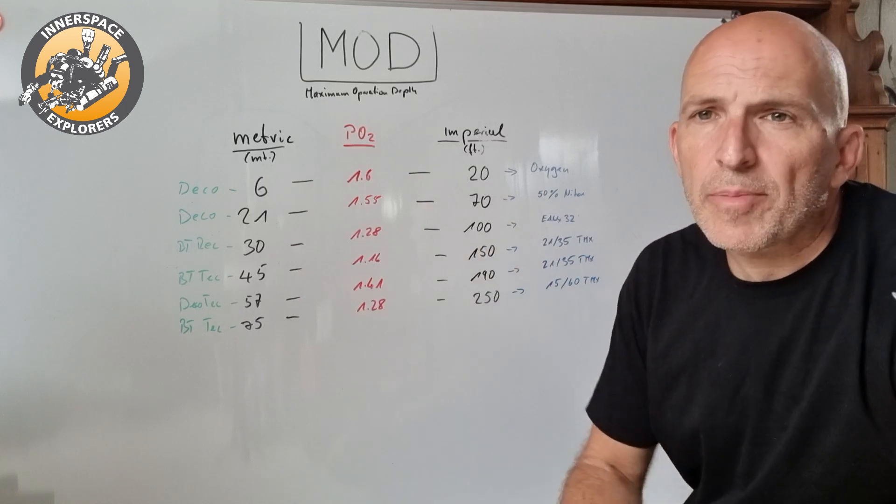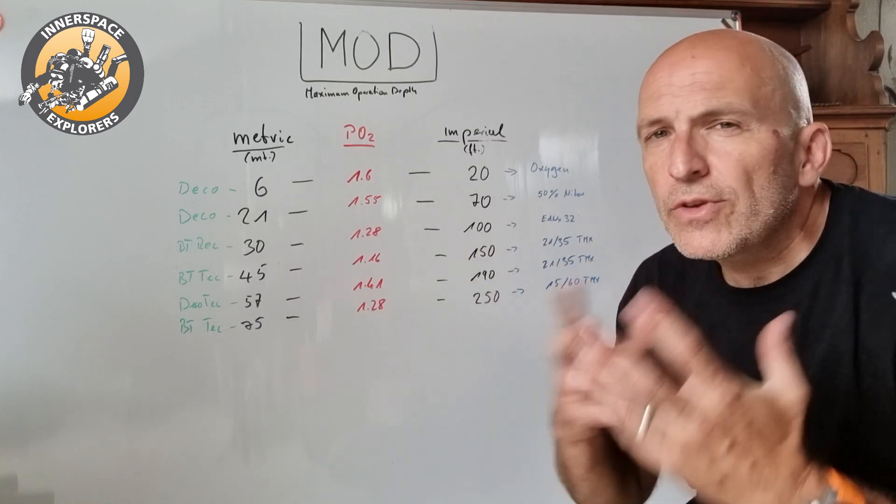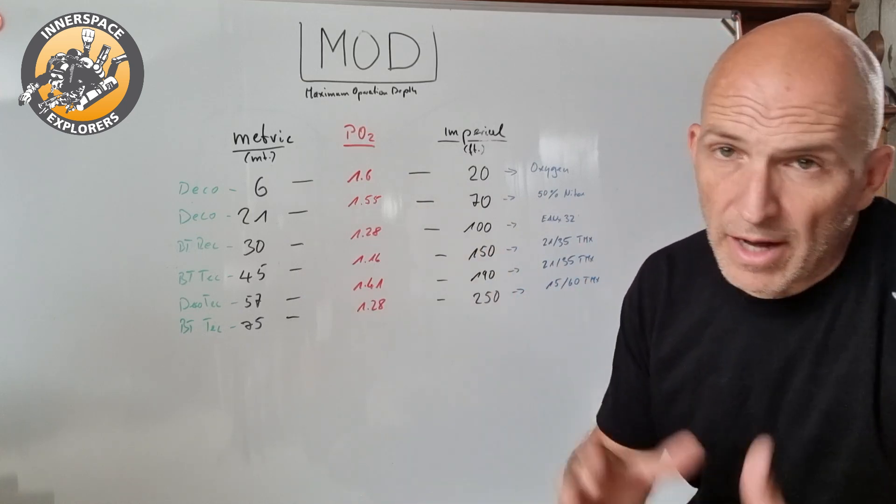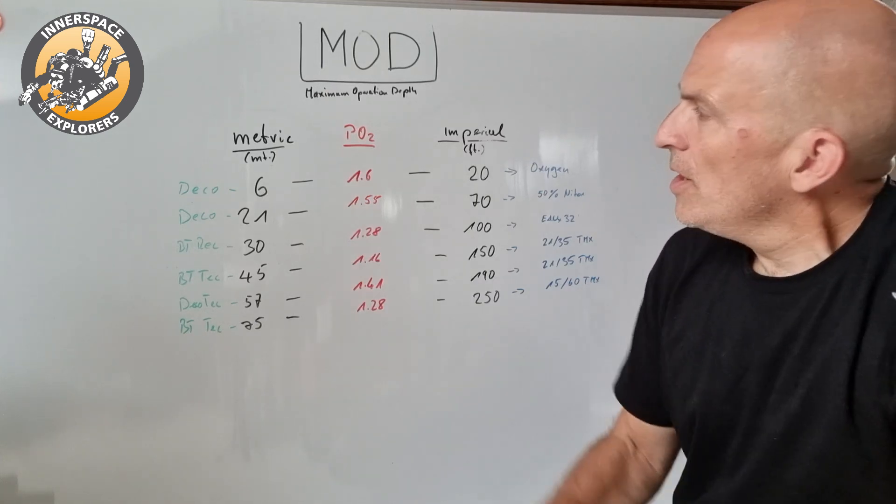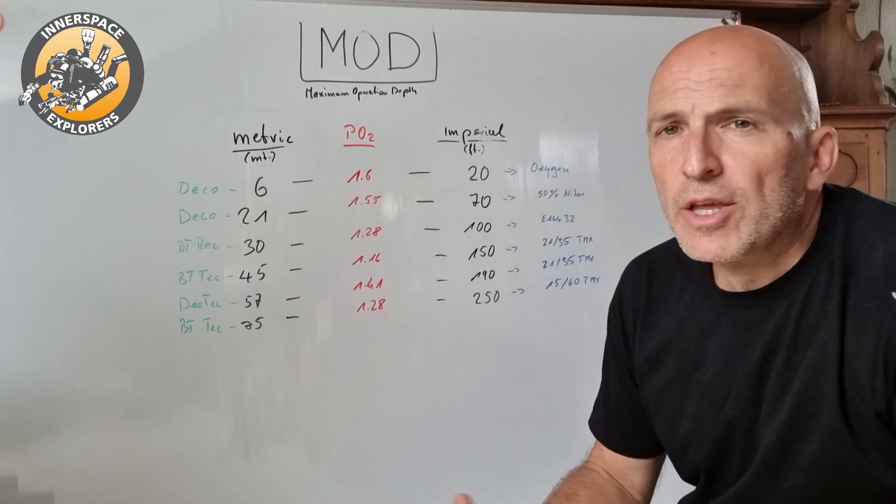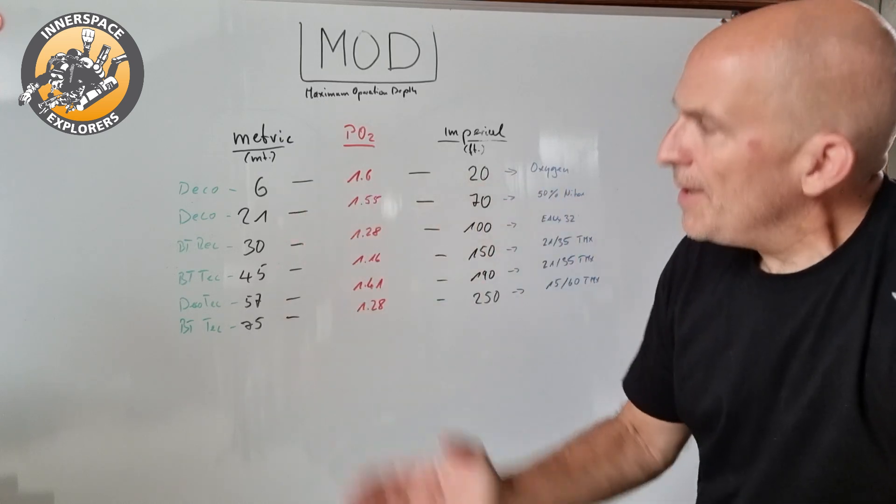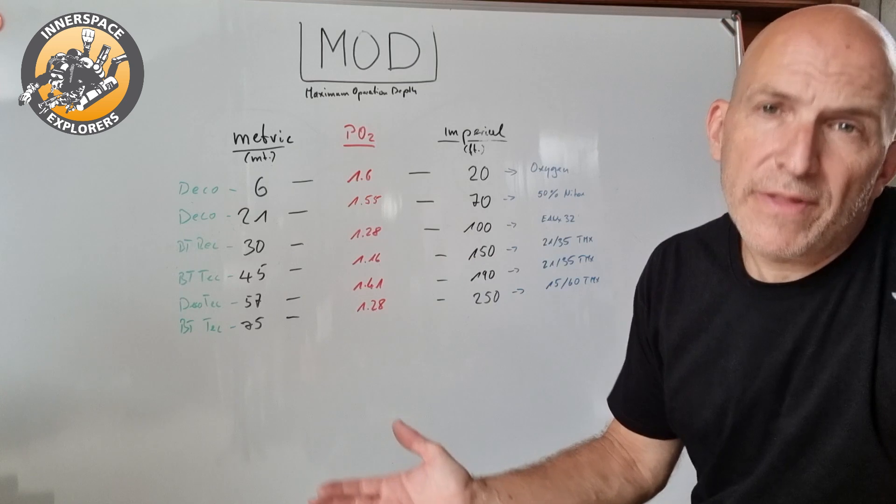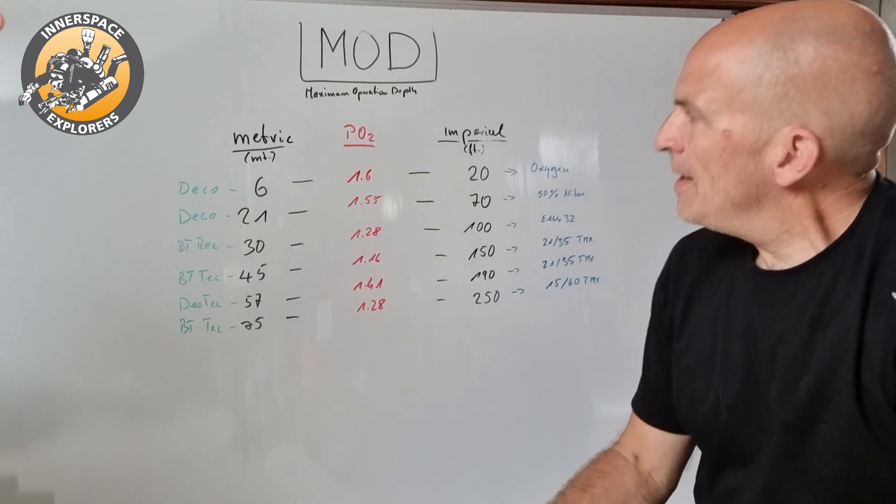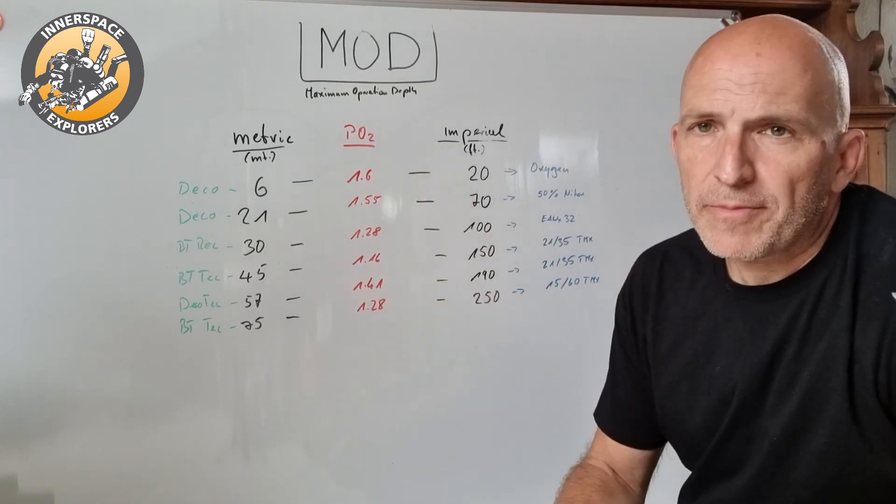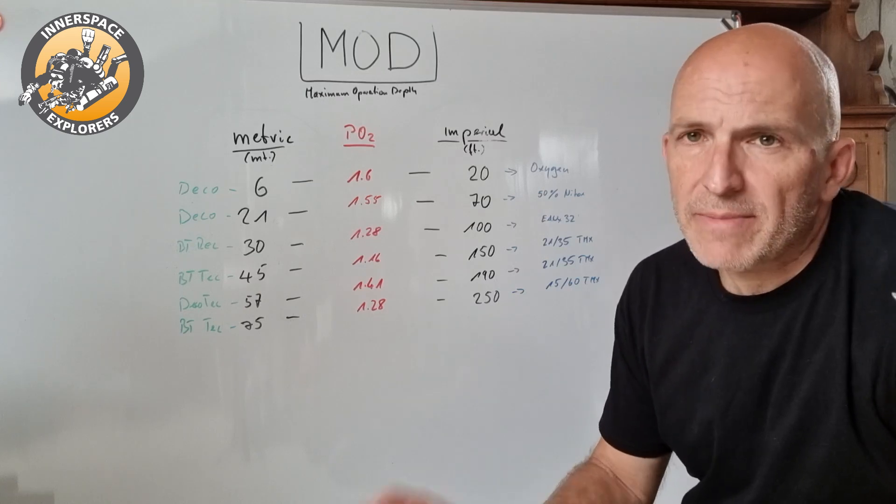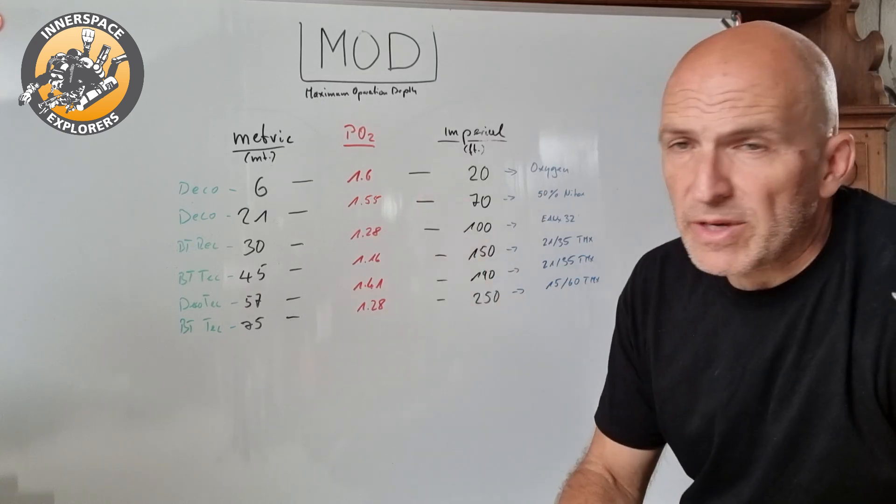Here's my metric numbers, the PO2, the imperial numbers, and we'll talk about the different gases and what we use them for. These are basically the markings that you can see on stages. My decompression tank containing pure oxygen would be labeled with 6 meters or 20 feet. It contains pure oxygen which I use for decompression purposes and the maximum operating depth for that is 1.6. That's the maximum, that's why it says 6 meters.